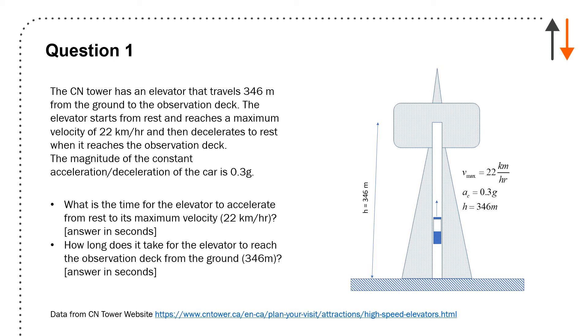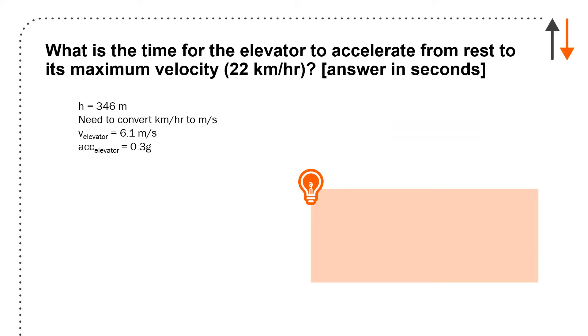The magnitude of the acceleration is ±0.3g, so it's got to be roughly about 3 meters per second squared. What is the time for the elevator to accelerate from rest to its maximum velocity of 22 kilometers per hour? How long does it take for the elevator to reach the observation deck from the ground? You get h = 346 meters.